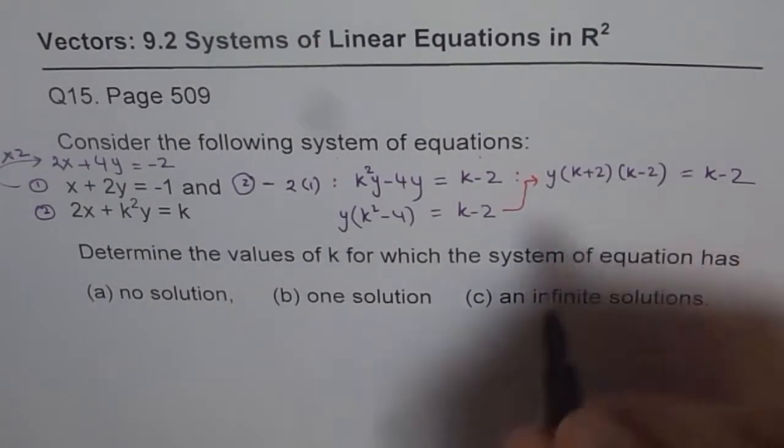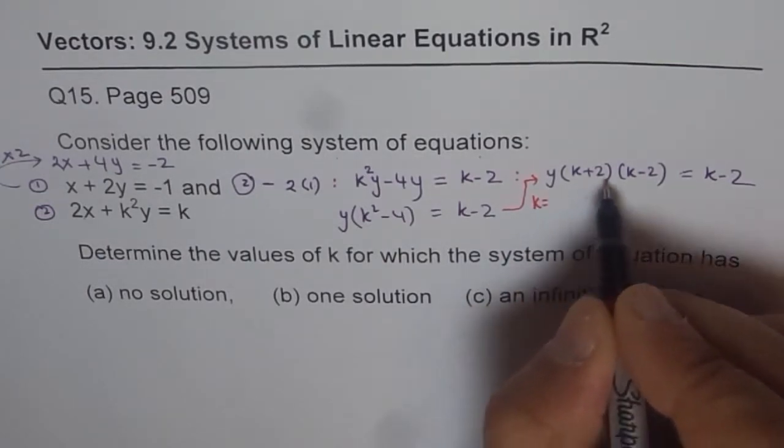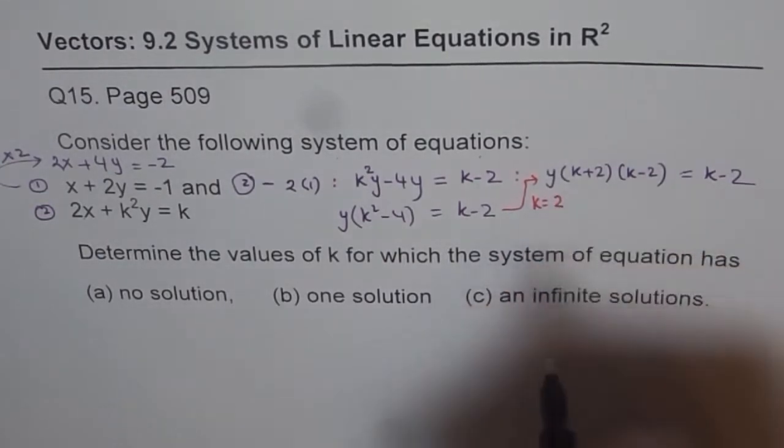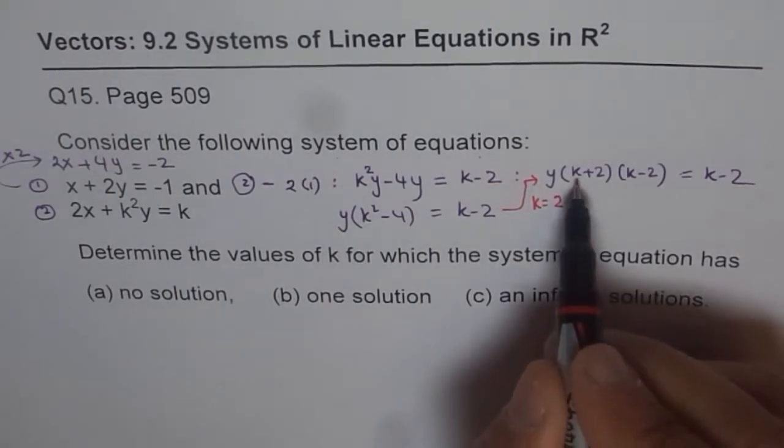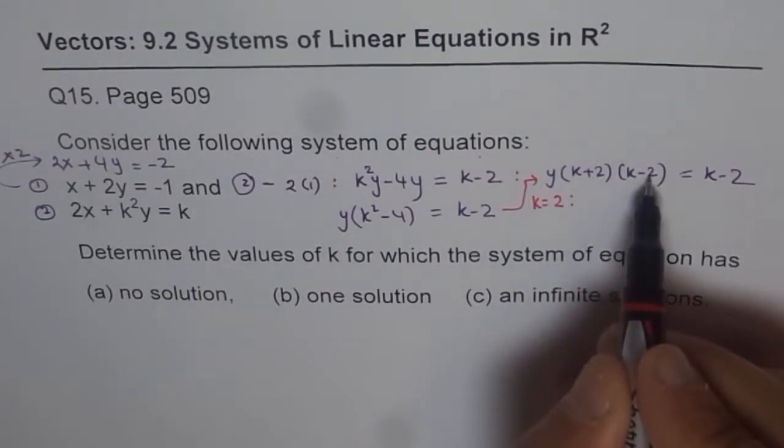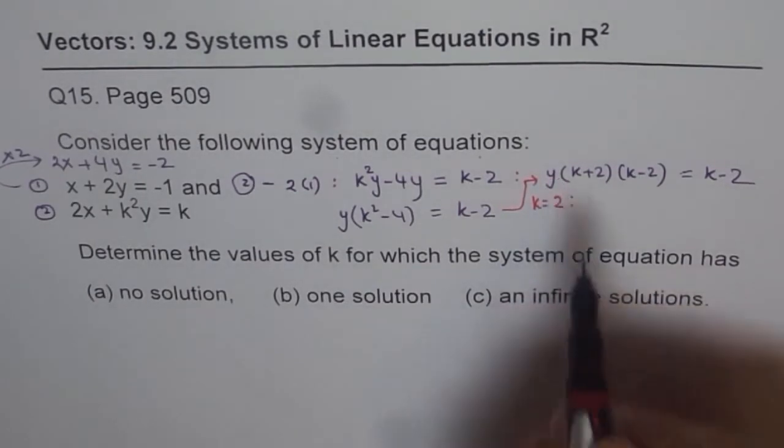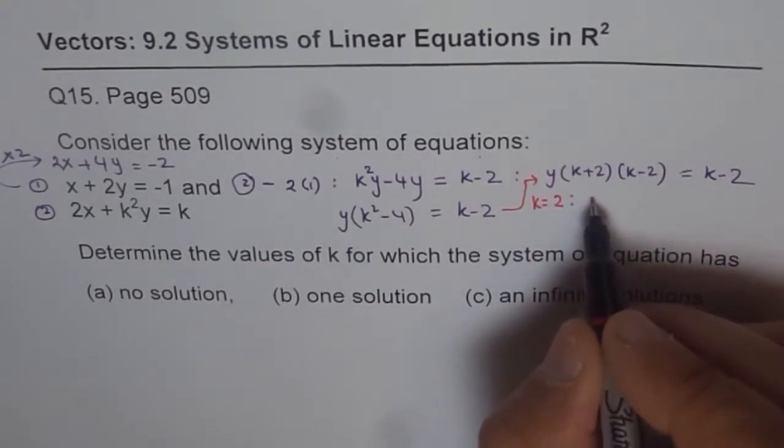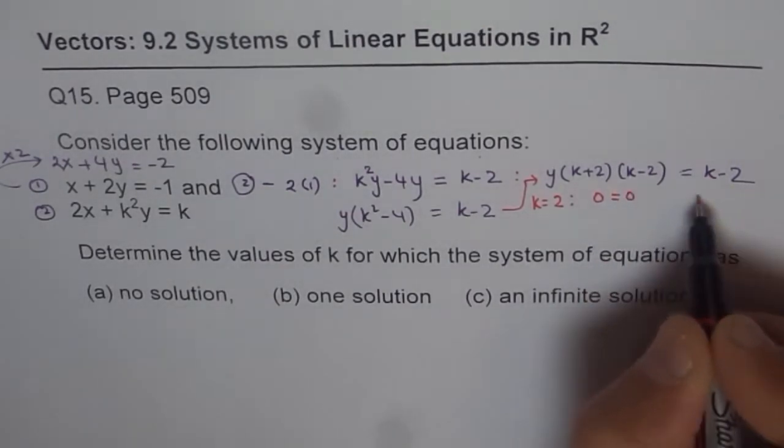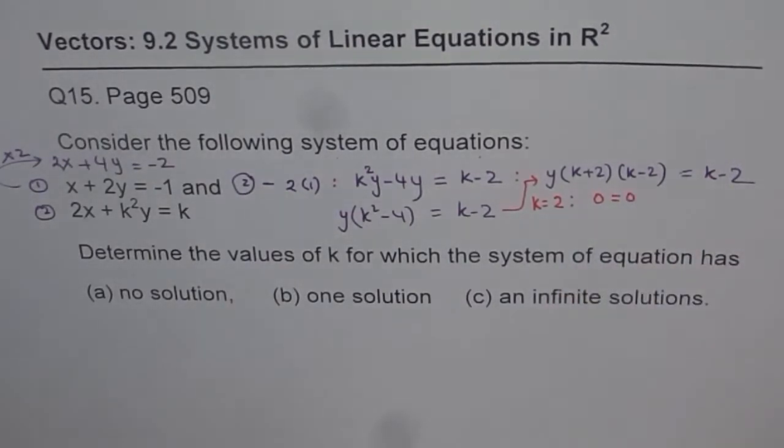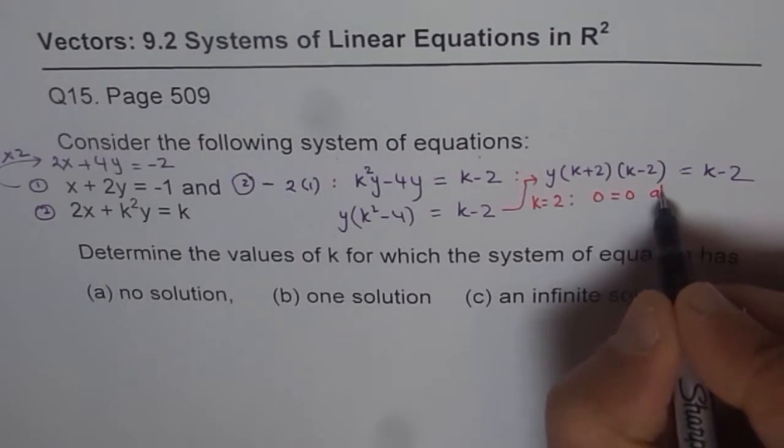So let's do first case, k equals to, let us say, plus 2. If I write k equals to plus 2, in that case, I get 2 minus 2 as 0, so I get 0 on the left side. So I get 0 on the left side, and plus 2 gives me 0 on the right side. Now, 0 is always equals to 0, so that is always true.